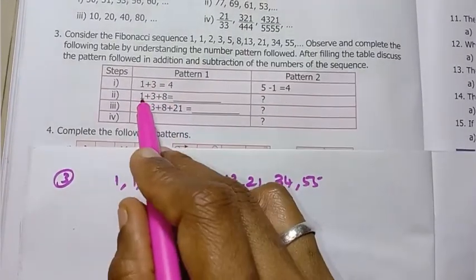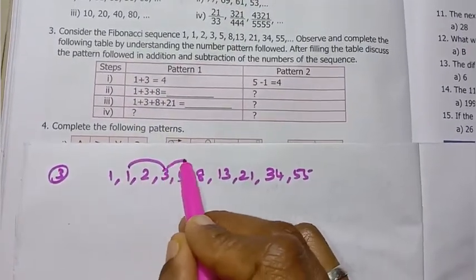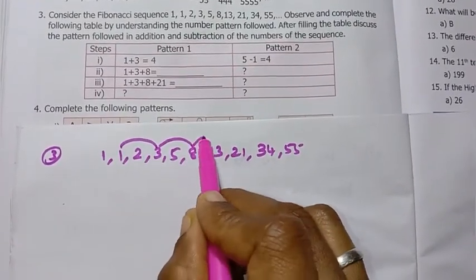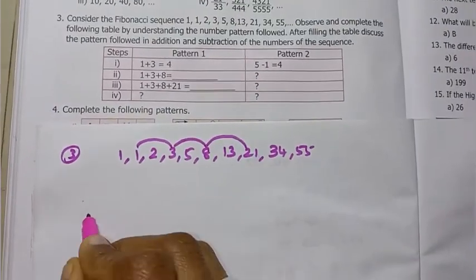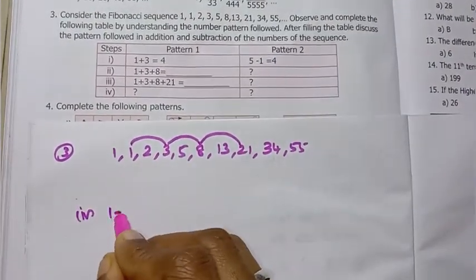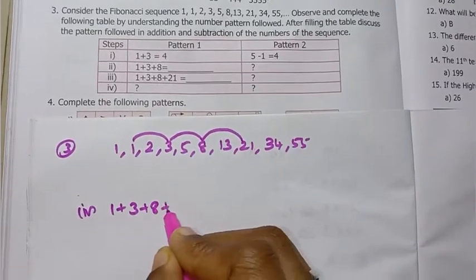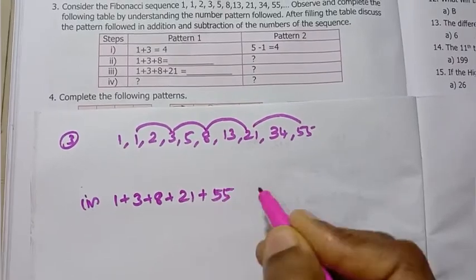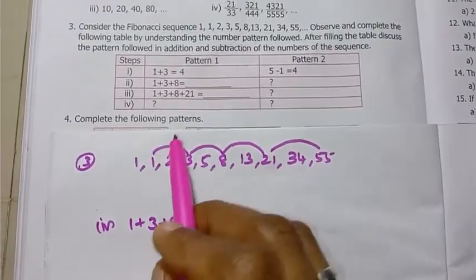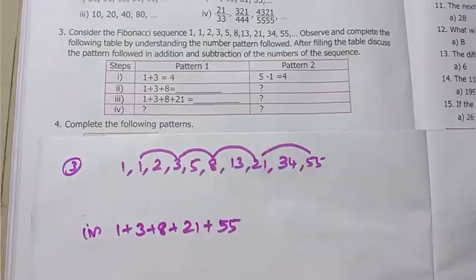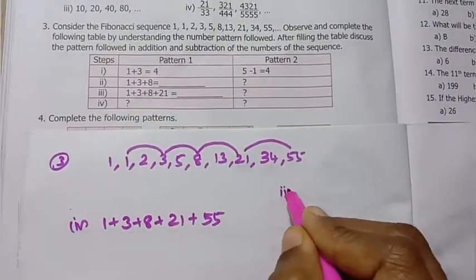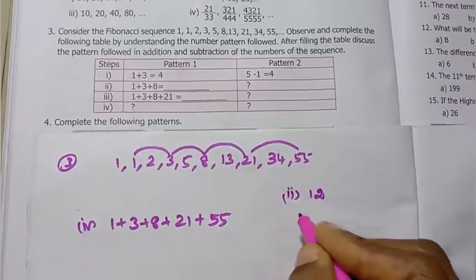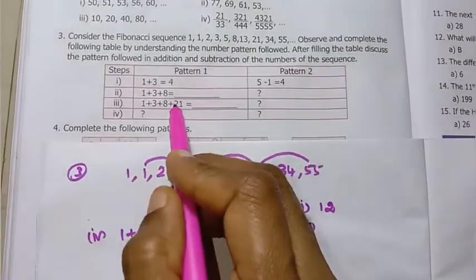Next: 1 plus 3 plus 8. Then 1 plus 3 plus 8 plus 21 plus 55. Now you can see the answer is related to position 4. The second answer is 1 plus 3 plus 8, which equals 12. Then the third one answer is 21 plus 8 gives 29, plus 3 gives 33.